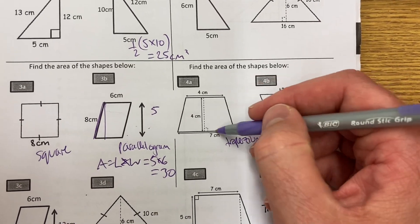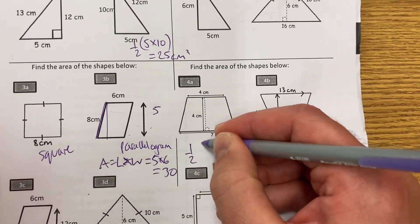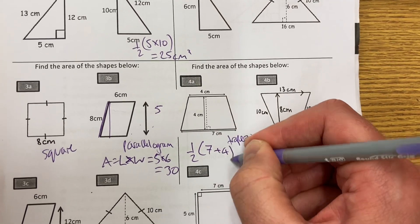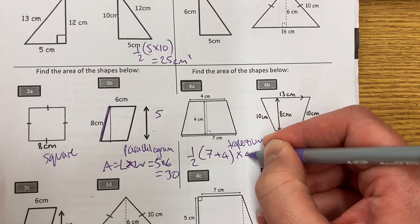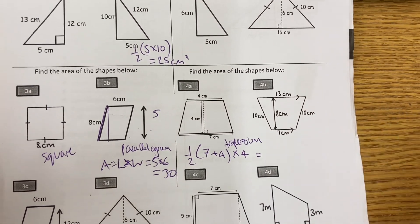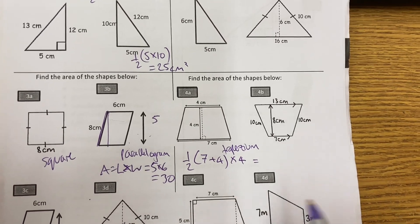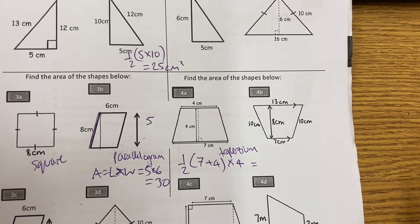Trapezium. I need to find the average of these two sides. So it's half of 7 and 4 times by the height. Please have a look at the video that I have about deriving all those formulae.